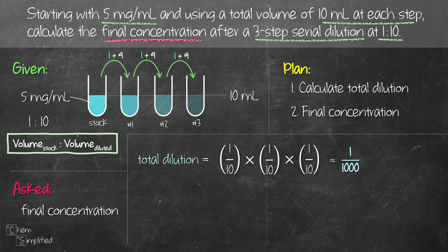To find the final concentration, which is the concentration of solution in test tube number 3, what we do is we take that 1 over 1000 that we've calculated and multiply it with the concentration of our stock solution, which is 5 mg per mL. So if we do the math it will work out to be 5 times 10 to the negative 3 mg per mL. That is the final concentration of our solution in test tube number 3 after a 3-step serial dilution at 1 to 10 dilution factor.